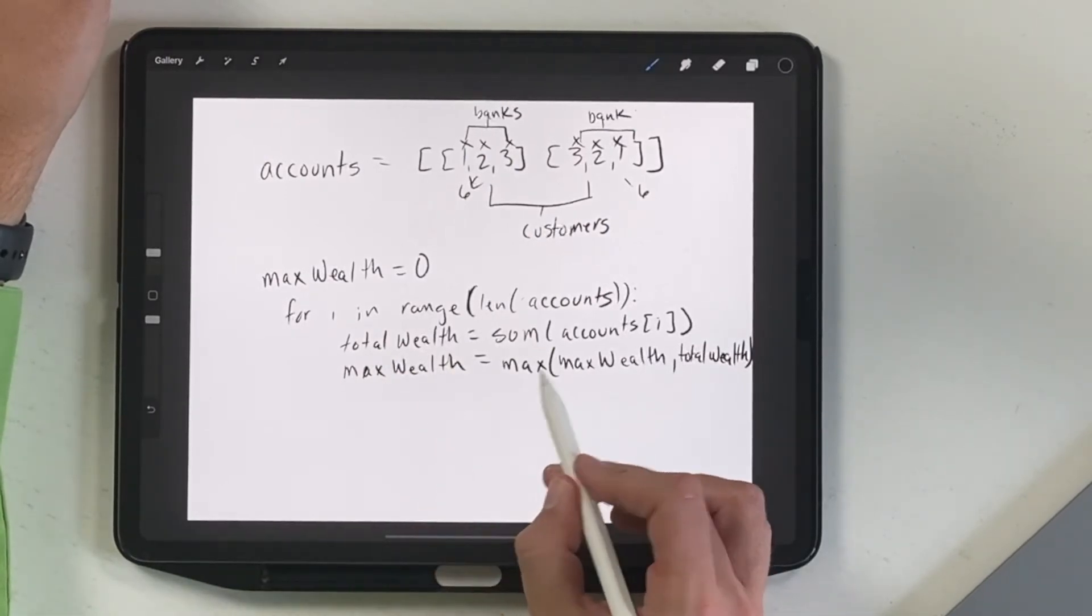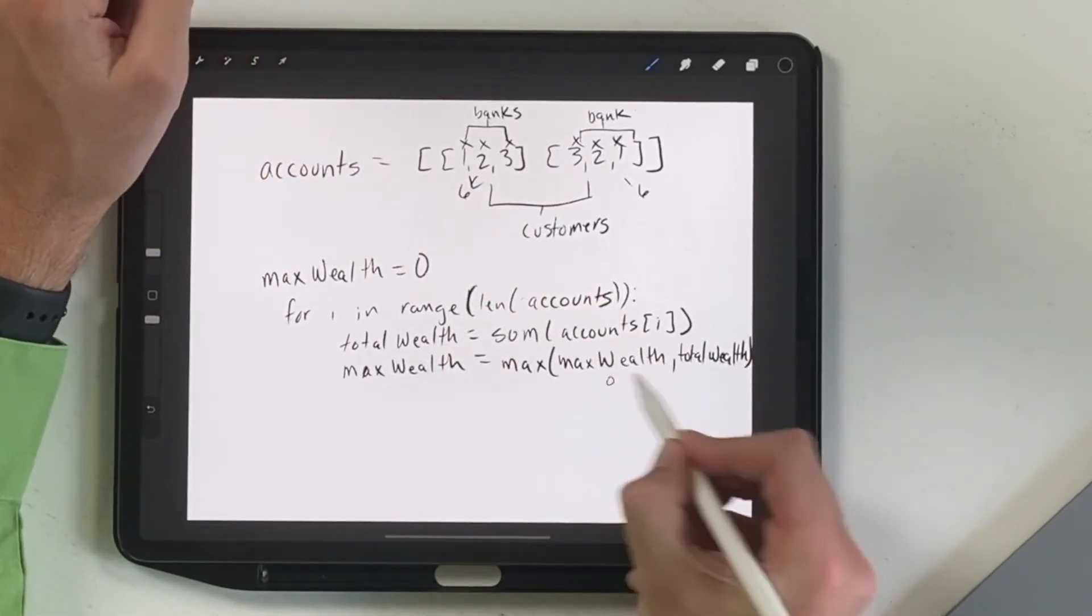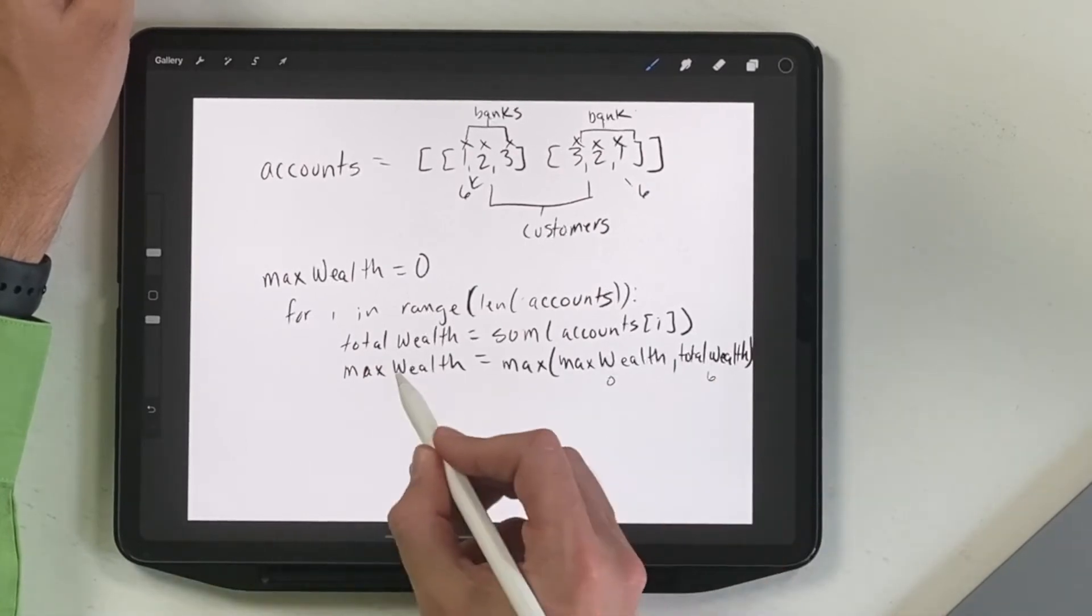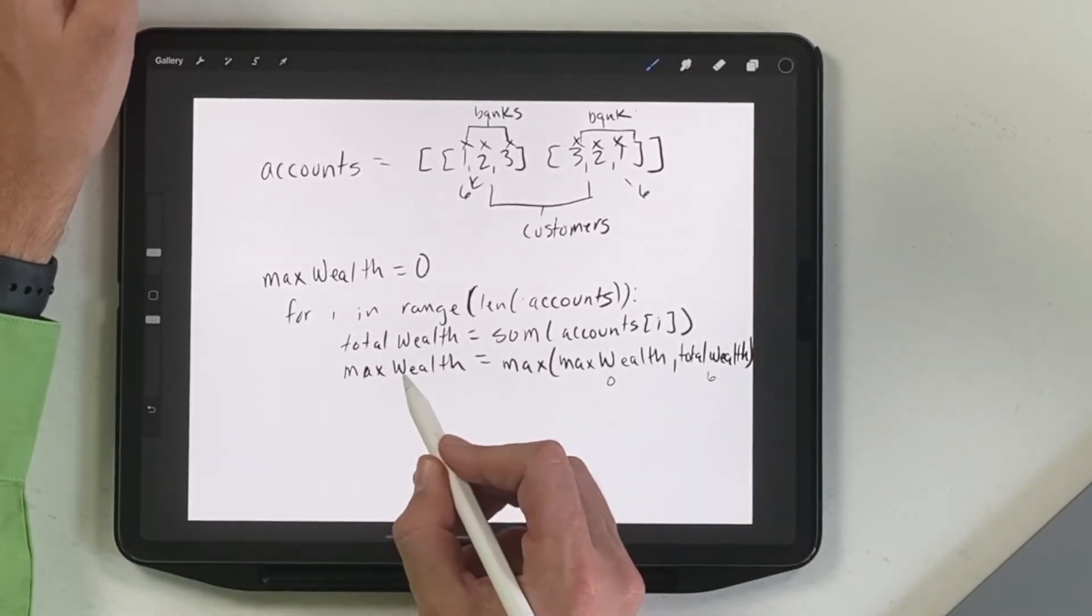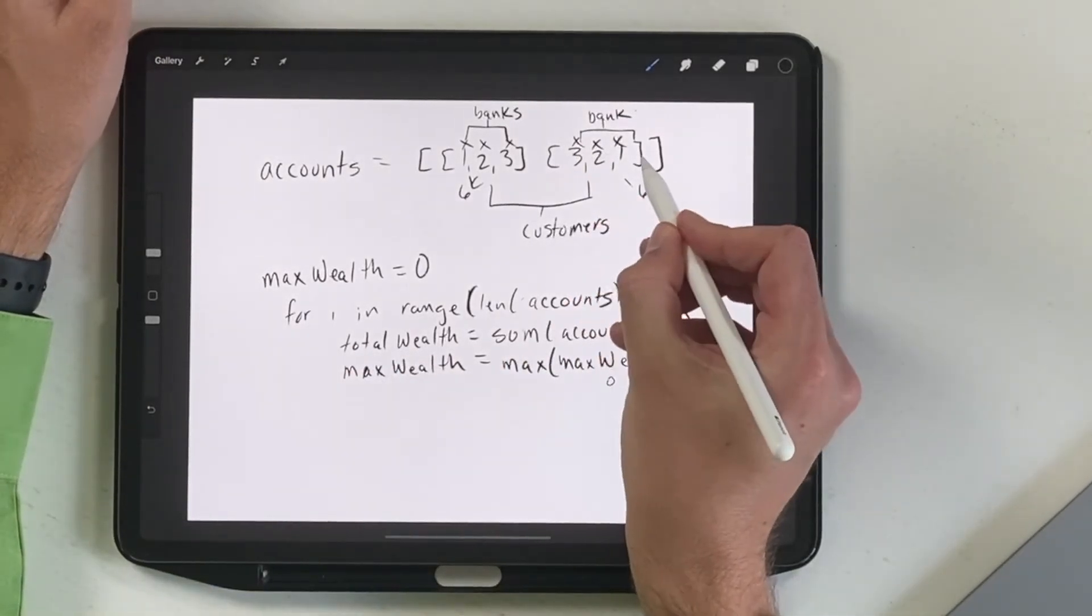Then the next one, what we're going to do is max wealth is currently zero. So we're going to have zero and six. So we know that we compare these two. So six is the larger number. So we're going to store six in the max wealth variable. And then we go through the for loop again, and we look at the next account, and we're going to add that one.